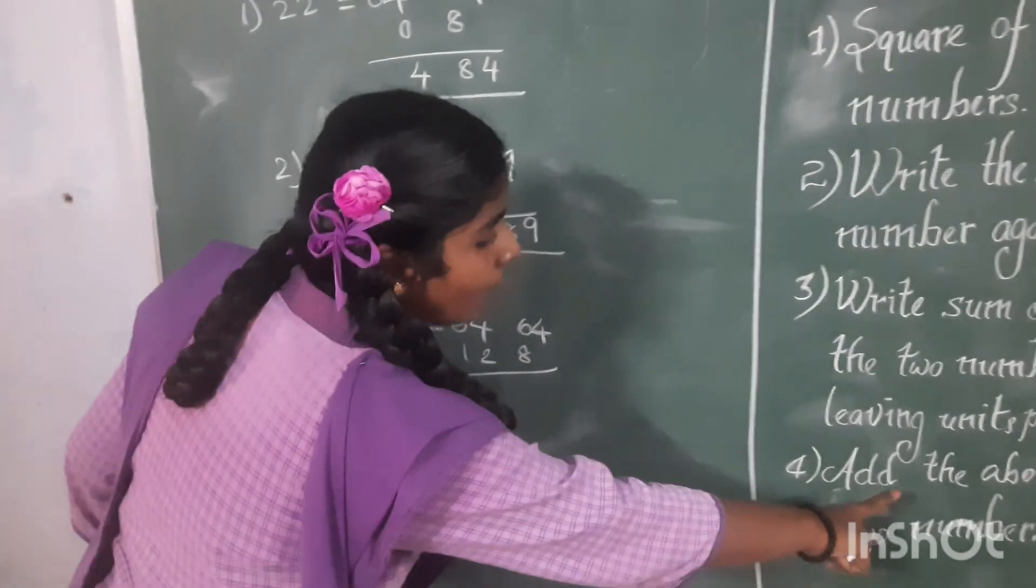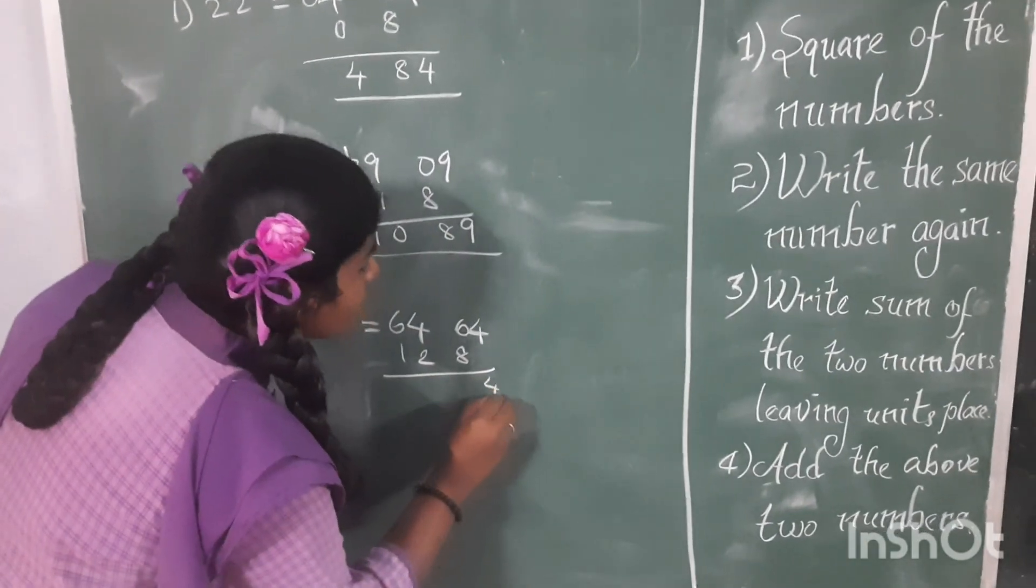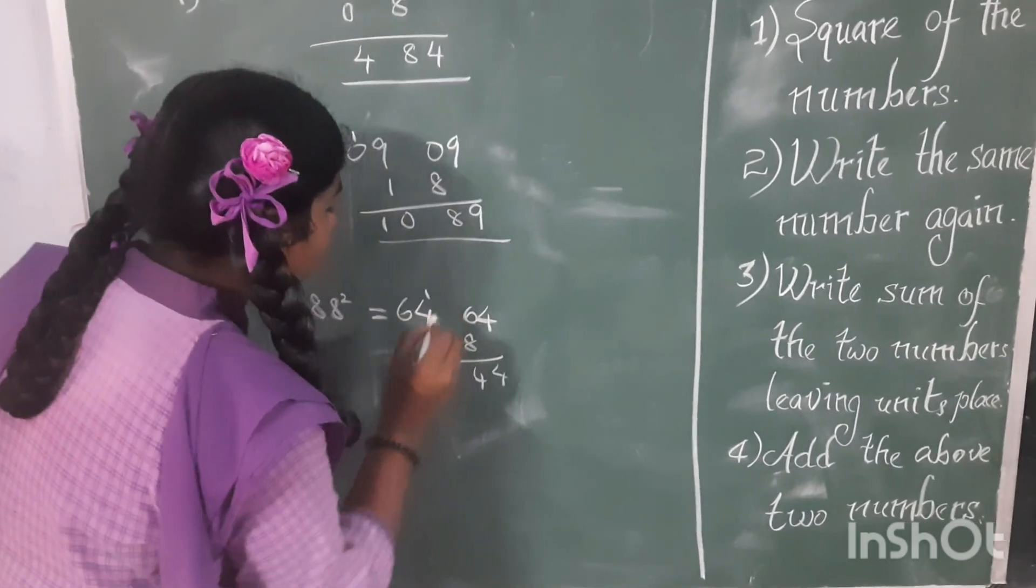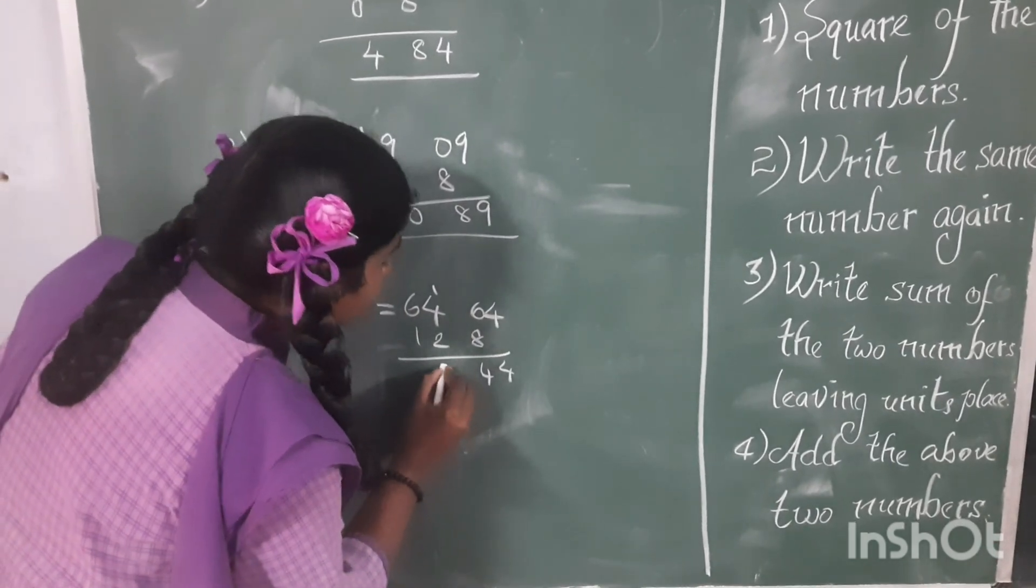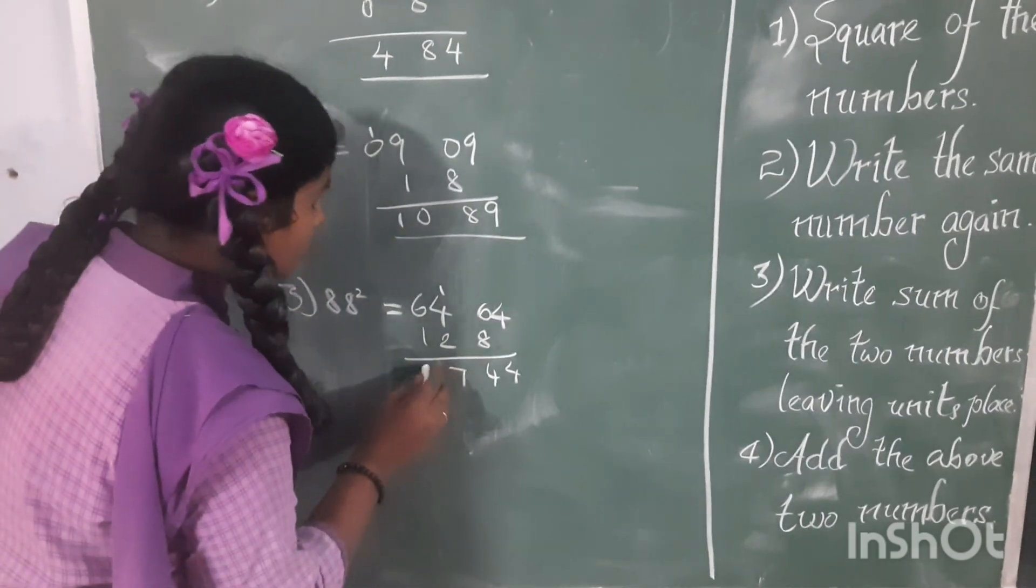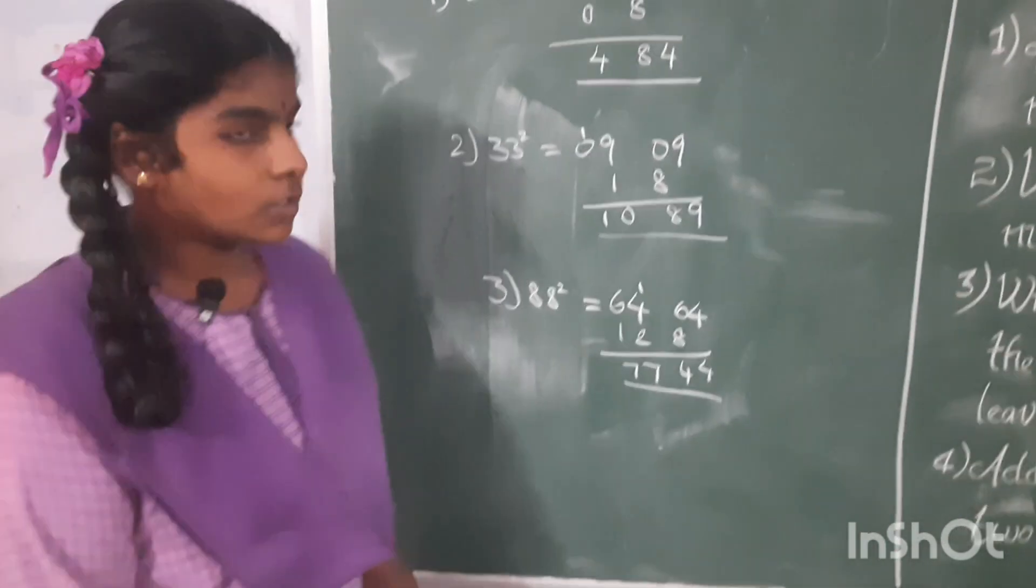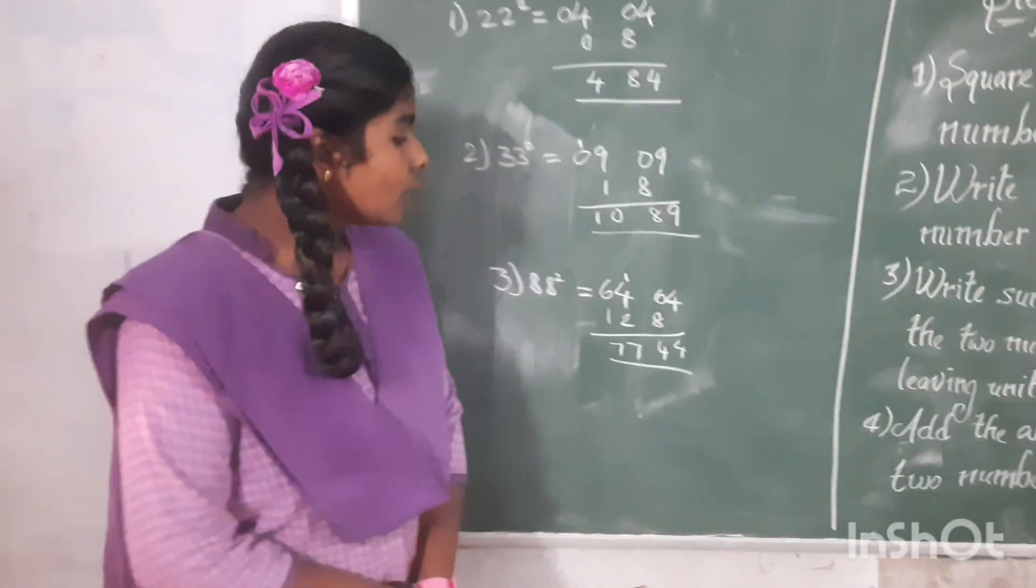Fourth step, add the above two numbers. 6 plus 4. 6 plus 8 is 14. 5 plus 2 is 7. 6 plus 1 is 7. 88 square is equal to 7744.